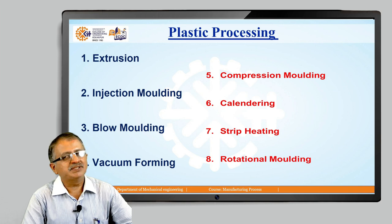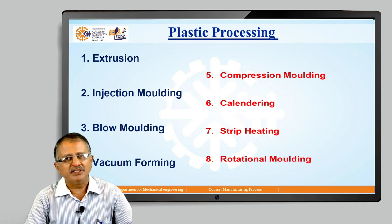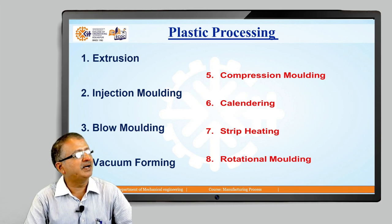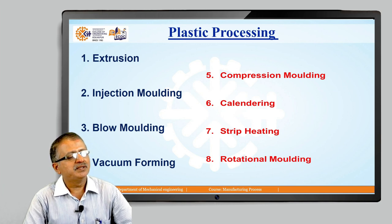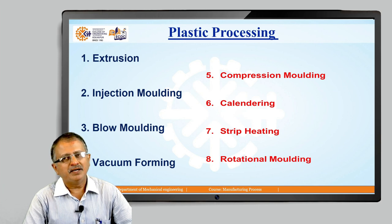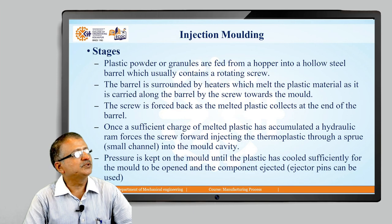The plastic processing methods which are commonly deployed and commercially available are: extrusion, injection molding, blow molding, vacuum forming, compression molding, calendaring, strip heating, and rotational molding. These are the methods which are commonly used for plastic processing.